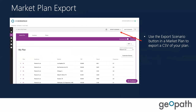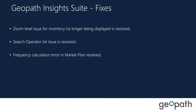In the foundational session in July, we spent a lot of time talking about the market planning tool that came out in the workspace module. One update to that is the ability to export the entire scenario of a market plan into a CSV — you can run these market average plans and then export those into a CSV file. There were also a few bug fixes: the zoom level issue for inventory that was no longer being displayed has been resolved, the search operator list issue has been resolved, and the frequency calculation error in market plan has been resolved. Some of these were found by our members, which is why we're happy to have members explore the tool and provide feedback.